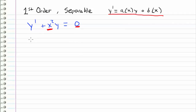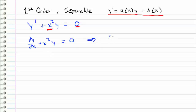So let me rewrite this as dy/dx plus x squared y is equal to 0. Now I'm going to get the x's with the dx and the y's with the dy's on opposite sides. So we can rewrite this as dy/dx is equal to negative x squared y — I simply moved this term over to the other side.